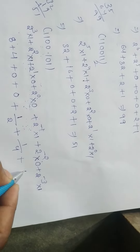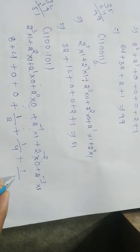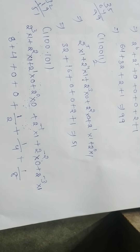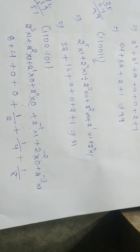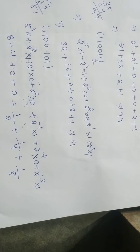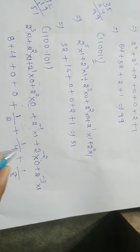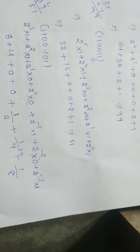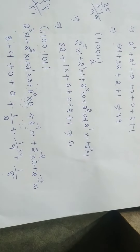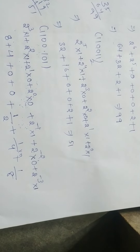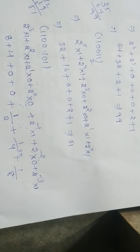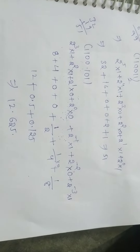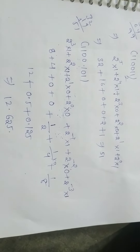Two power minus one means one by two, into one, equals 0.5. Two power minus two means one by four, into zero, equals zero. Two power minus three means one by eight, equals 0.125. So the total is eight plus four plus 0.5 plus 0.125, which equals 12.625. This is the decimal equivalent of the binary floating point number.